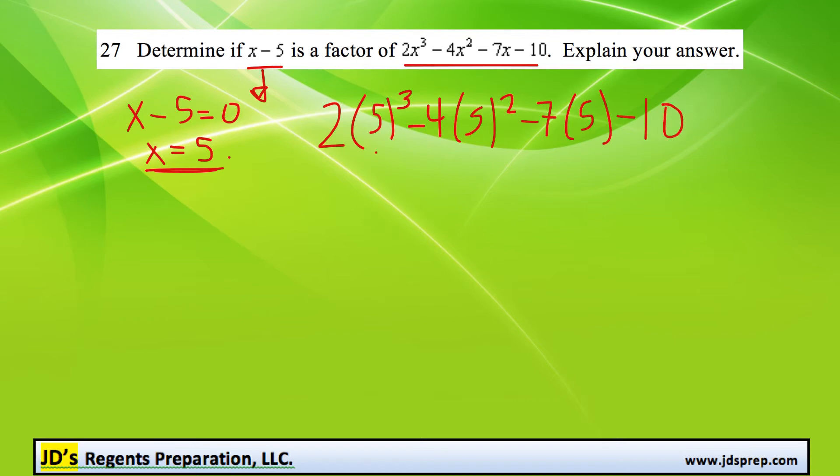All right, so that's 125 times 2, so 250 minus 25 times 4, that's 100, minus 35, minus 10.